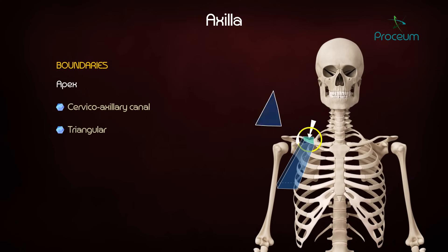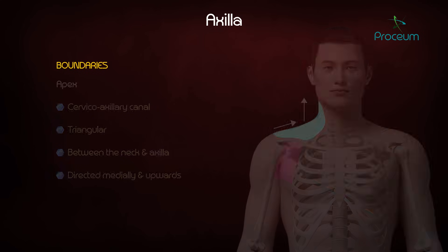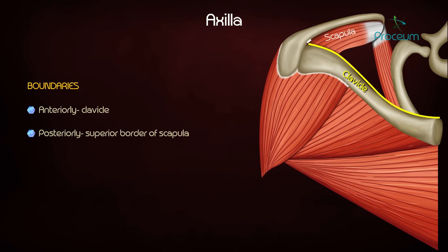The apex is triangular in shape and is a passage between the neck and the axilla. It is directed medially and upwards. Boundaries of the apex are: anteriorly the clavicle, posteriorly the superior border of the scapula, and medially the outer border of the first rib.